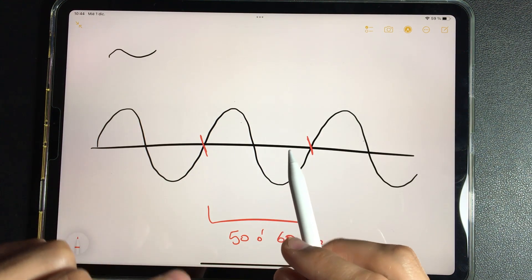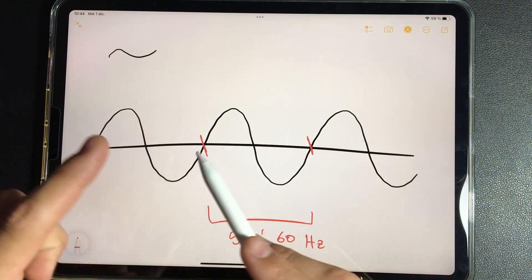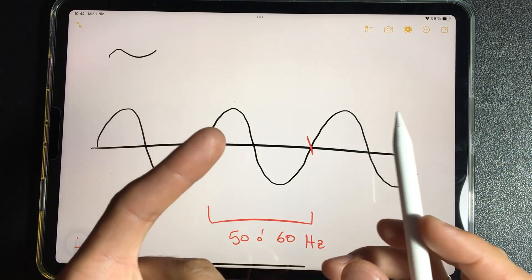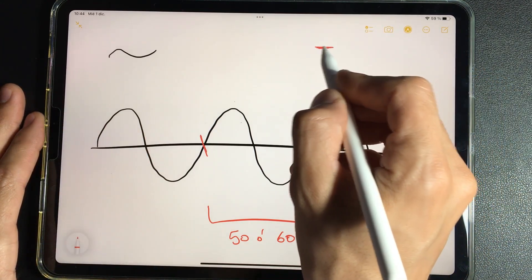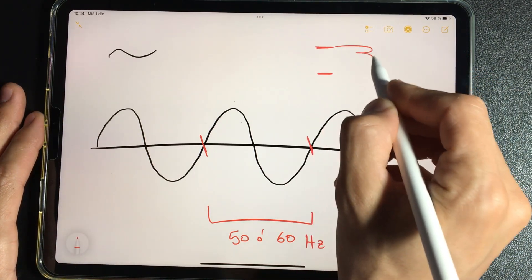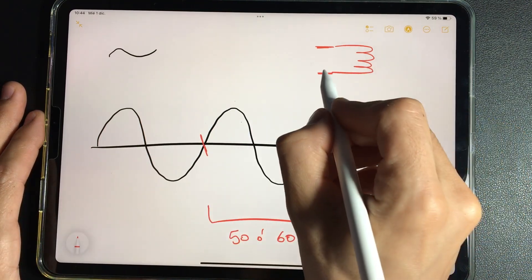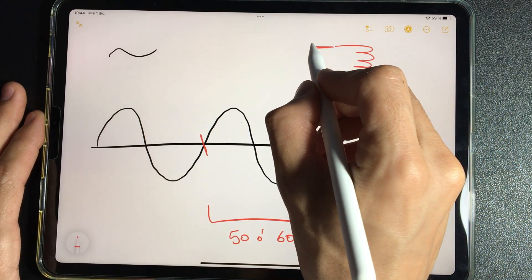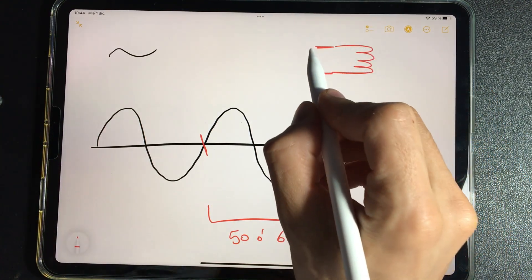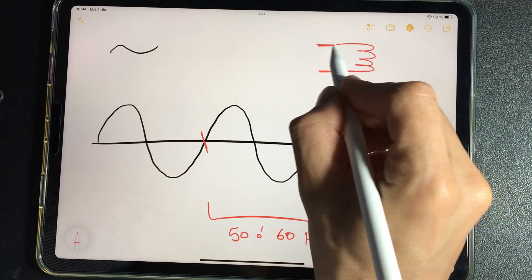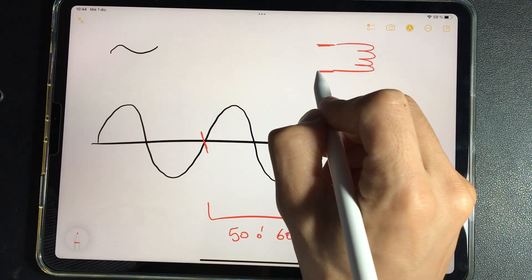This circulation of electrons to one side and to the other produces an opposite effect. Imagine you have one electrical conductor and another. Here you have the circuit, the electrons are going to go there. But at the moment when the electrons change direction, at that moment they stop.